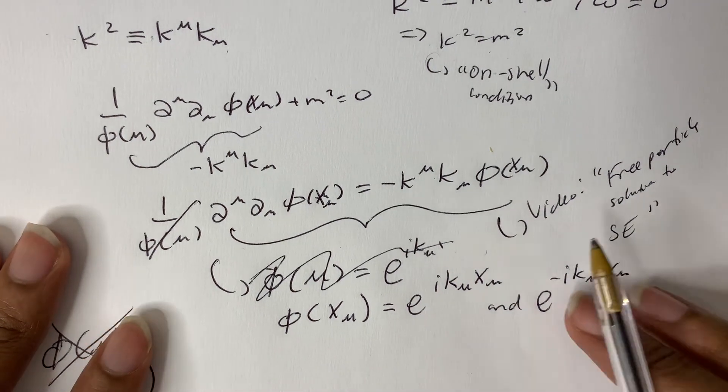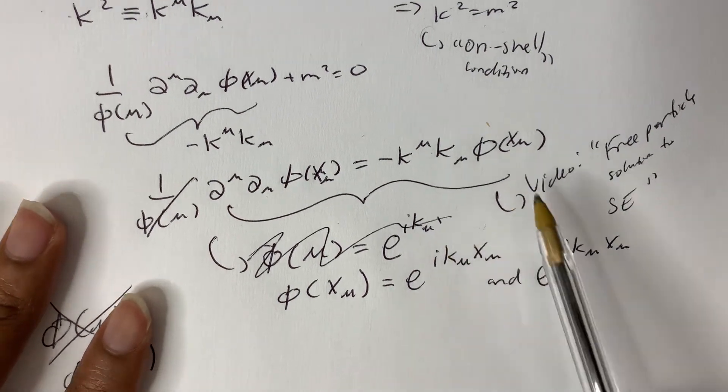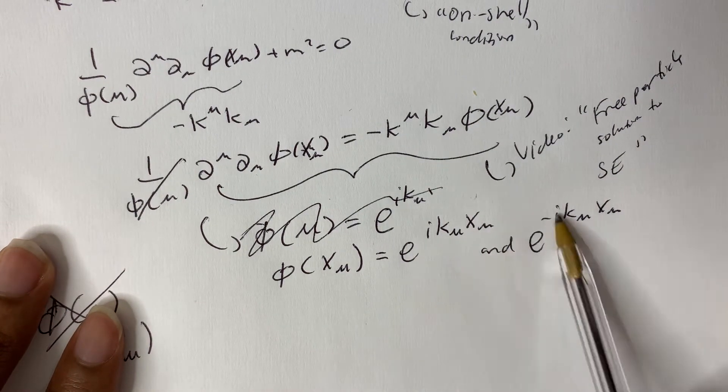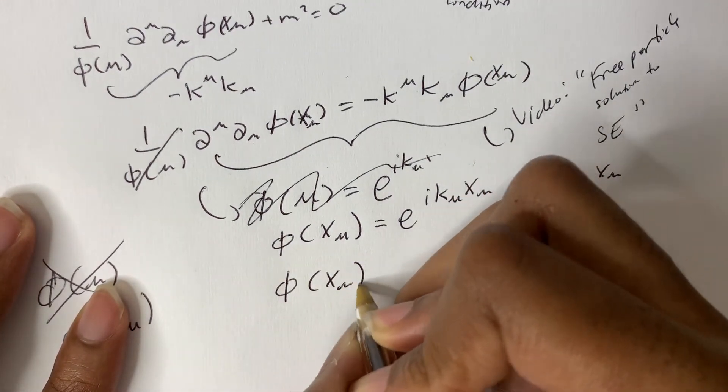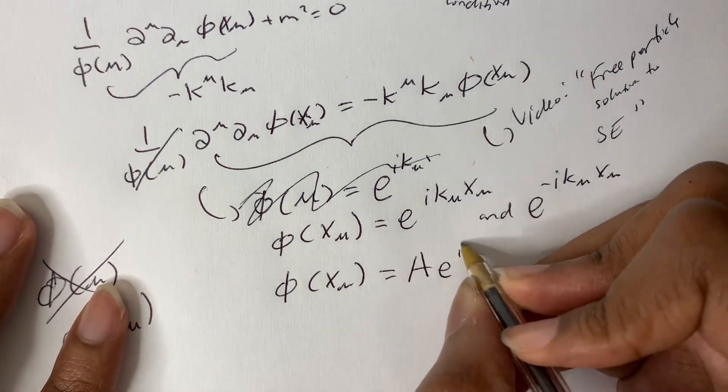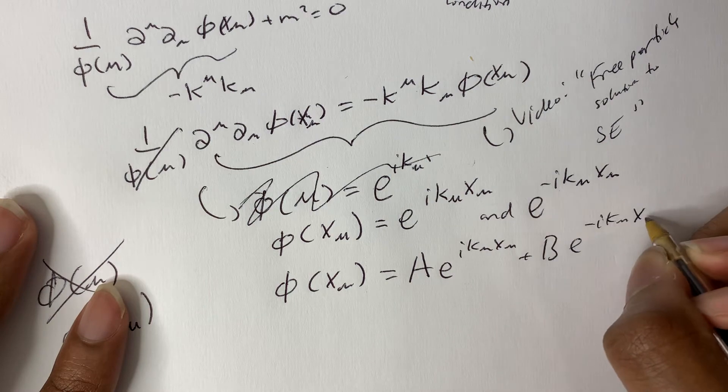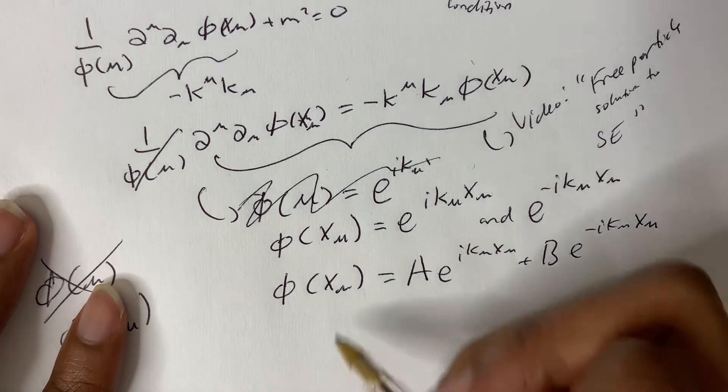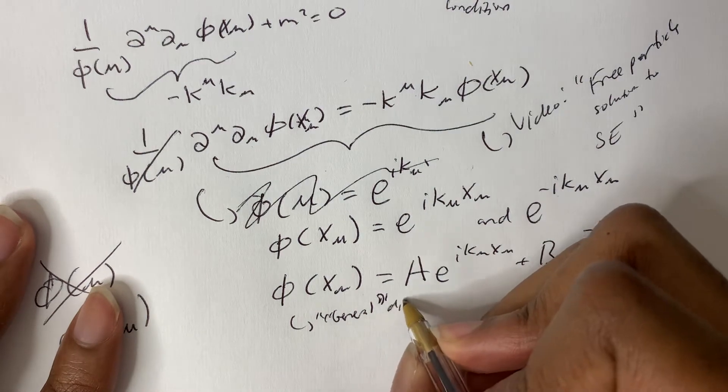So what we can do, since we have two independent solutions, is we can take a superposition of those solutions. Phi of x mu, we have A e to the i k_mu x^mu, plus B e to the minus i k_mu x^mu. So we're just taking a linear combination of those two terms. And this is the general, big quotes on general, direct solution.